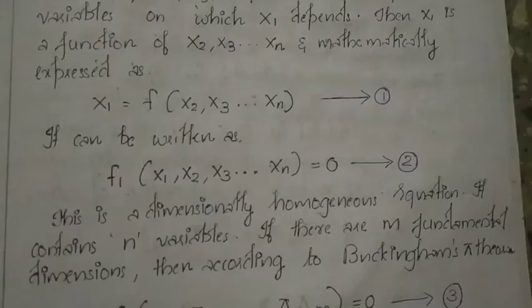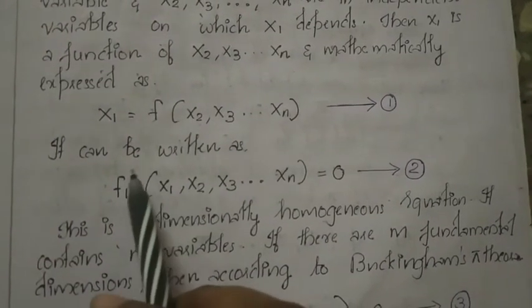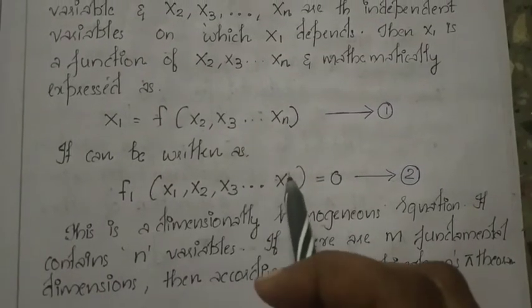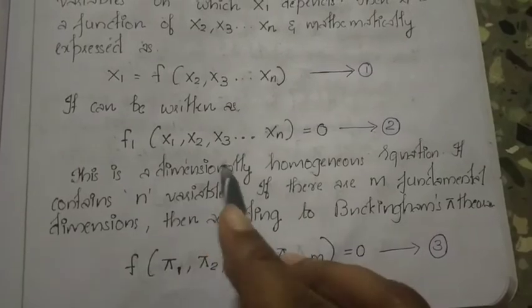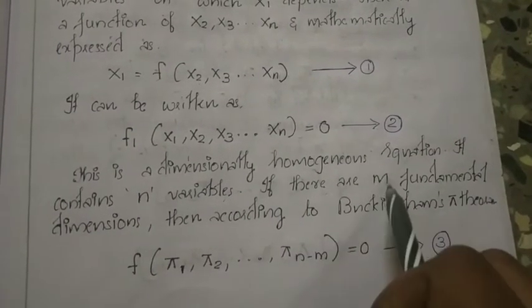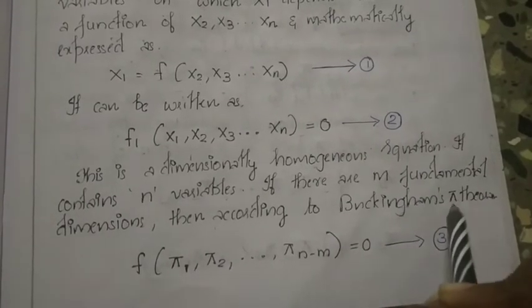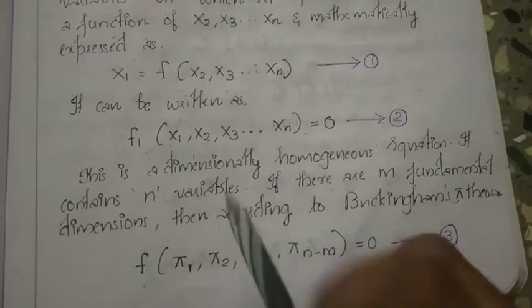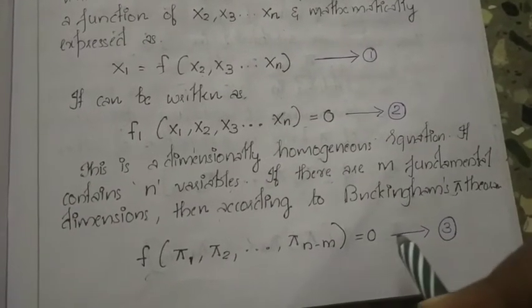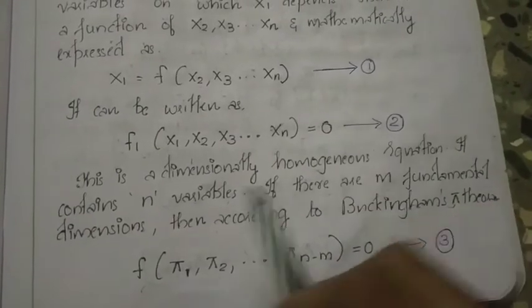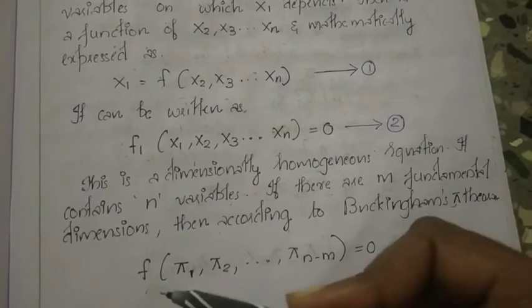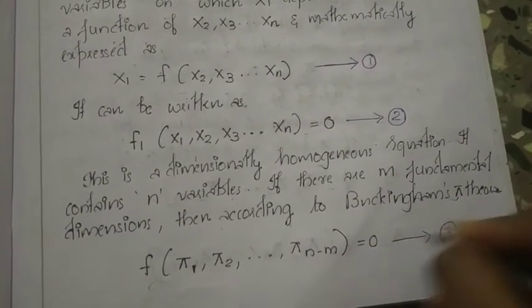This is a dimensionally homogeneous equation with n variables. If there are m fundamental dimensions, then by Buckingham's Pi theorem, the equation becomes F(π1, π2, ... πn-m) = 0, which is equation number 3.